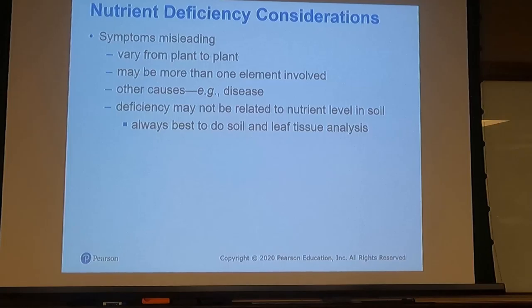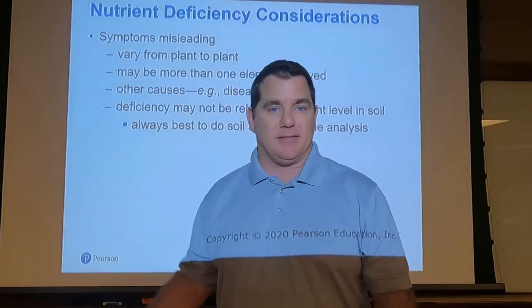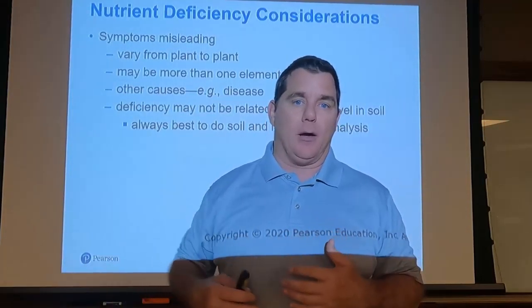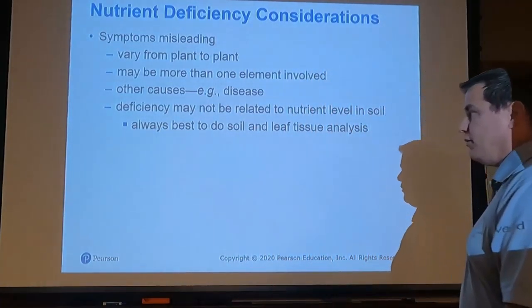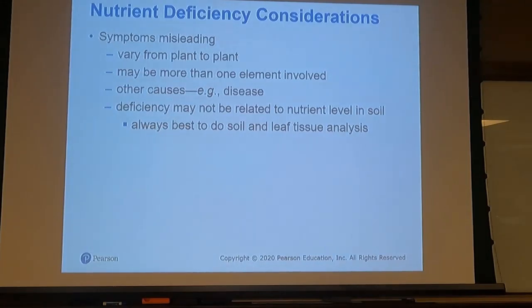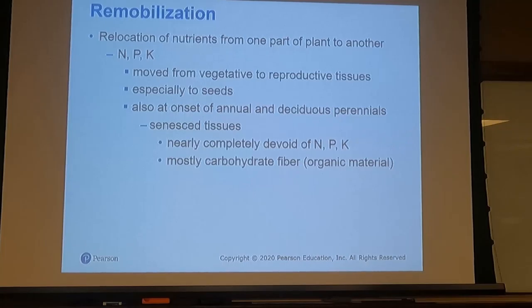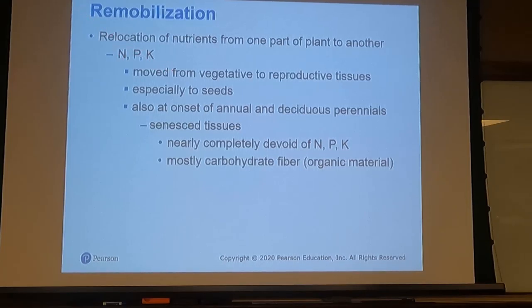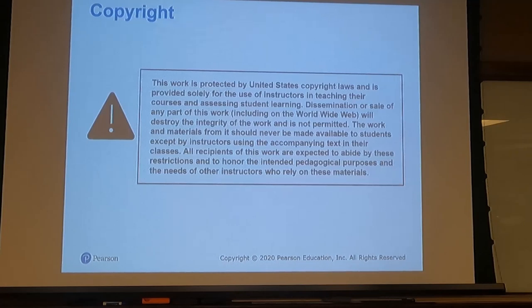Nutrient deficiencies are tough to determine — some are straightforward, but they vary plant to plant, and more than one deficiency can occur simultaneously. The most accurate way is to do a soil test or leaf tissue analysis, which come back in a couple of days with a recommendation on what and how much fertilizer to apply. The phloem can also relocate nutrients from other parts of the plant in response to deficiency signals until more fertilizer is added.